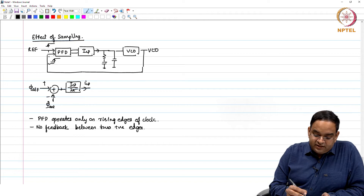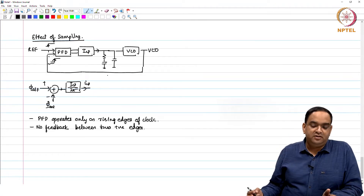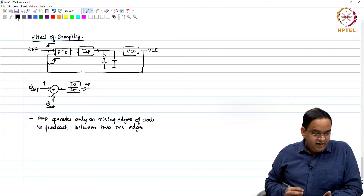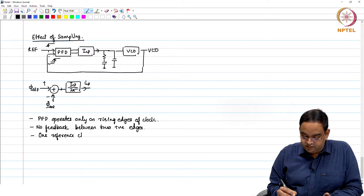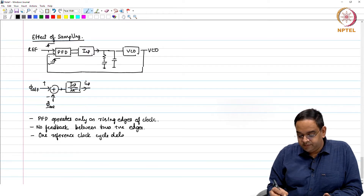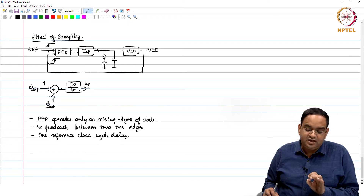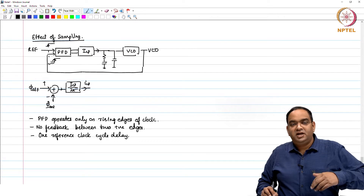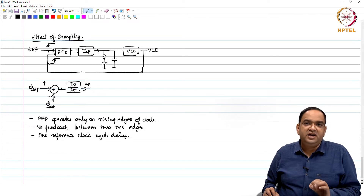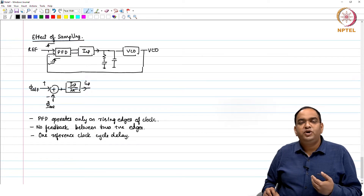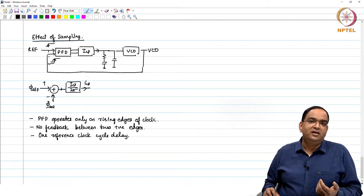If the VCO edge has changed, until the next VCO edge comes you are not going to do anything, whatever happens to the VCO. Another thing is there is a one reference clock cycle delay. If there is any disturbance in the charge pump or PFD and it happens before the rising edge on the reference or the output clock, it will be taken into account; otherwise it will be taken into account only in the next reference clock cycle. So there is a one reference clock cycle delay.